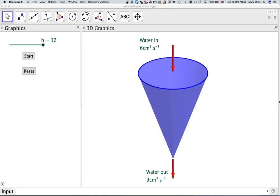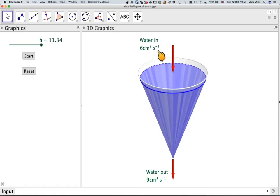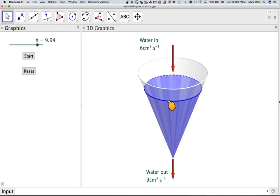If we start the animation, we'll see what will happen. Because the rate here is greater than the rate here, the water level will gently lower, and the water will eventually pour out.